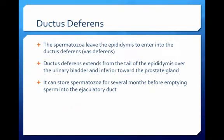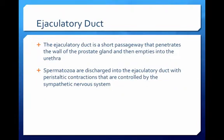The spermatozoa leave the epididymis to enter into the ductus deferens. The ductus deferens is a tube that is 16 to 18 inches long. It begins at the tail of the epididymis and ascends through the inguinal canal in the spermatic cord. It curves over the urinary bladder and descends down toward the prostate gland and seminal glands. The ductus deferens can store spermatozoa for several months before emptying the sperm into the ejaculatory duct. The ejaculatory duct is a short passageway that penetrates the wall of the prostate gland and then empties into the urethra. The spermatozoa will be discharged into the ejaculatory duct at emission with peristaltic contractions that are controlled by the sympathetic nervous system.